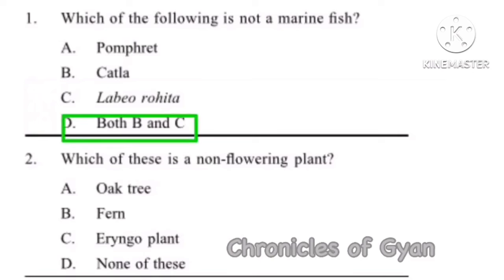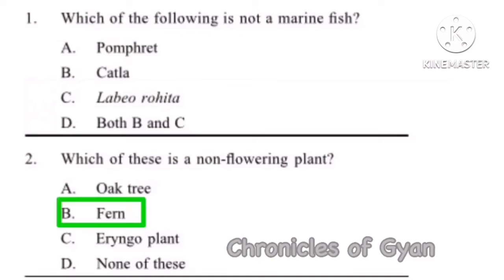Question 2: Which of these is a non-flowering plant? Oak tree as well as Eryngium plant, both are flowering plants — they reproduce through the formation of flowers and seeds. Ferns are non-flowering plants and they reproduce via spores, not by seeds. So the correct answer is Option B, fern.